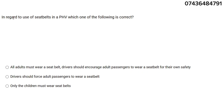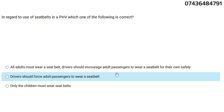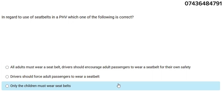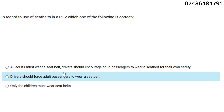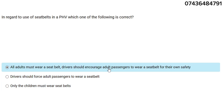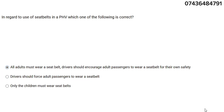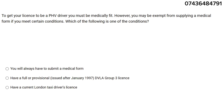In regard to use of seat belts in a PHV, which one of the following is correct? The correct answer is: all adults must wear a seat belt. The driver should encourage adult passengers to wear a seat belt for their own safety.